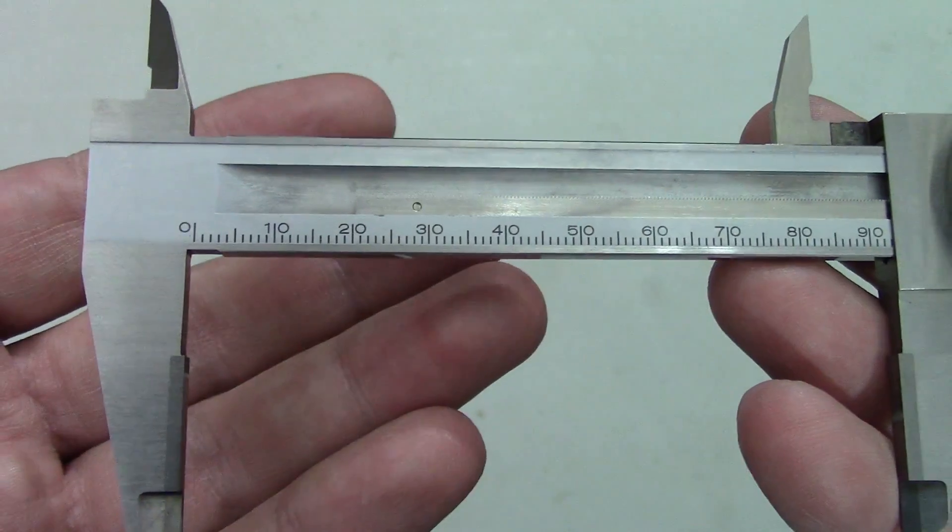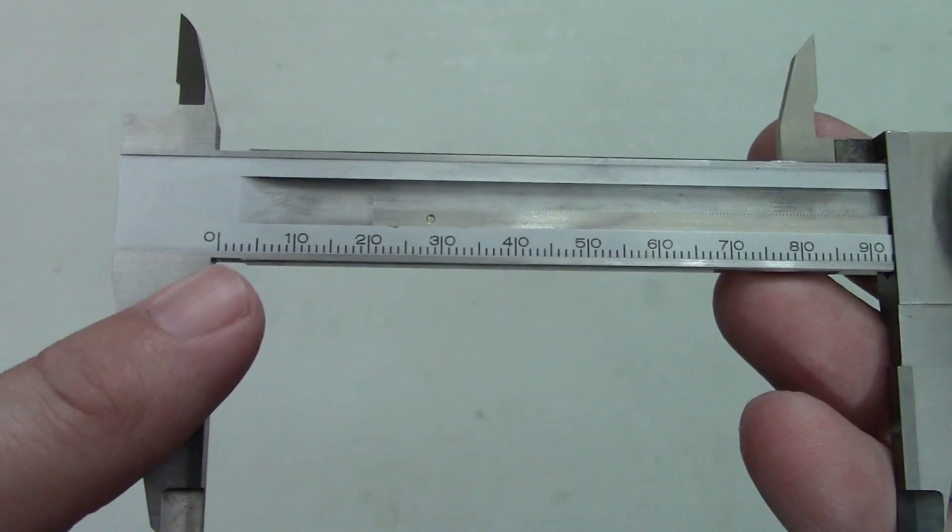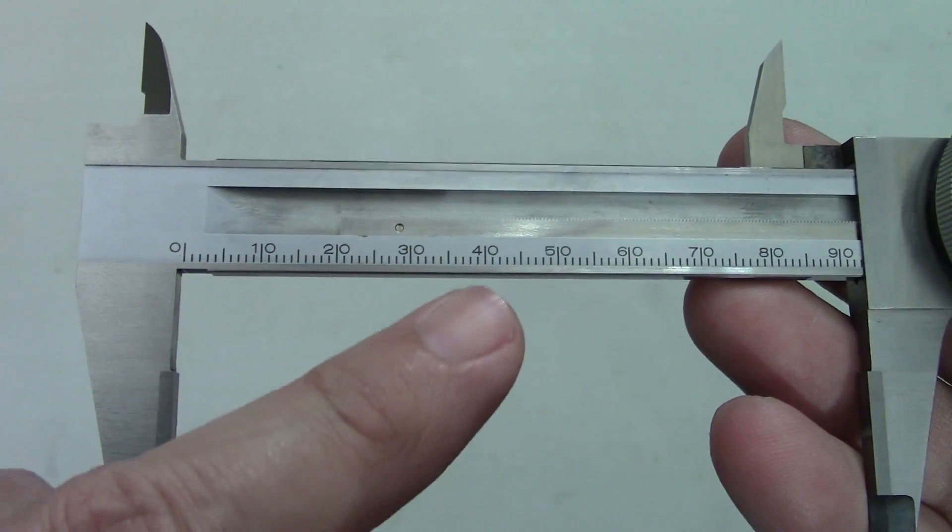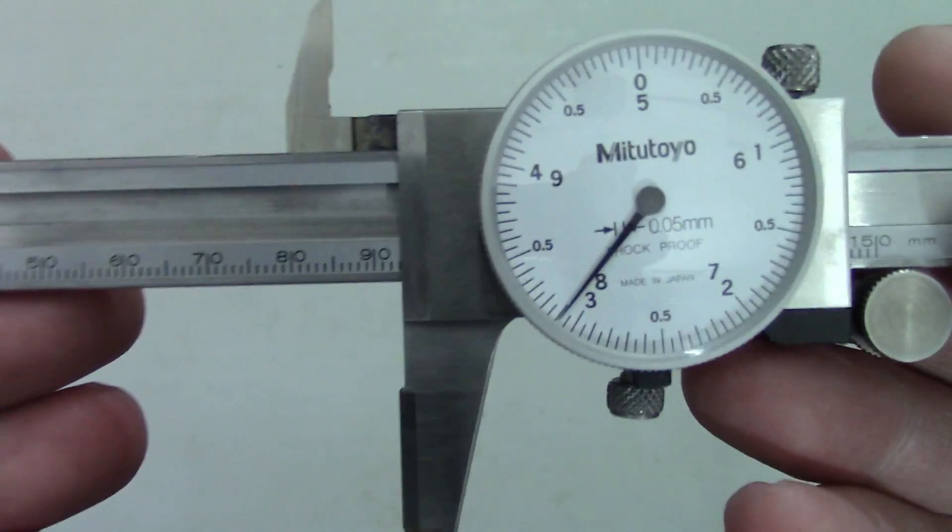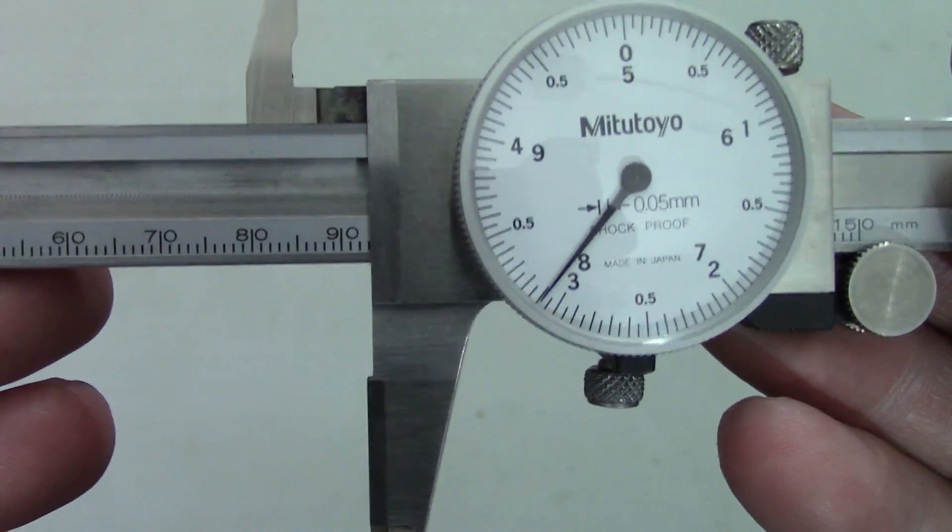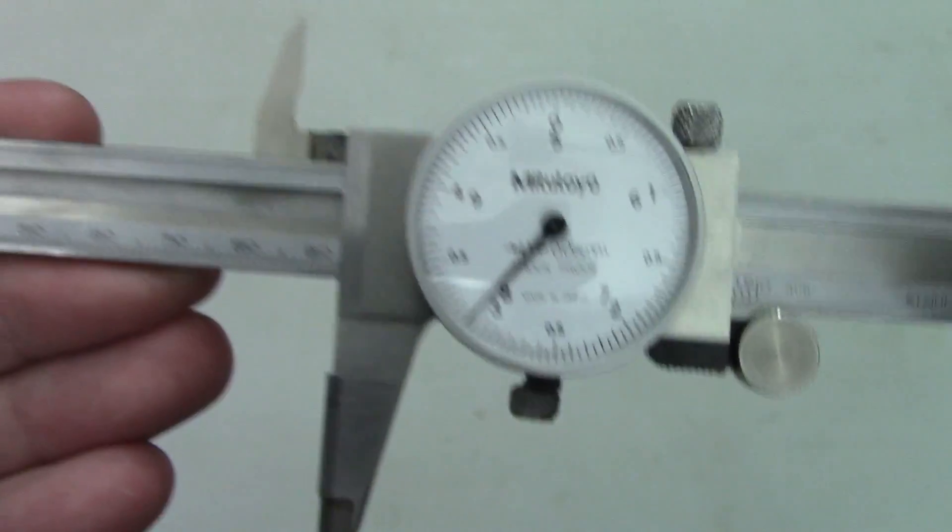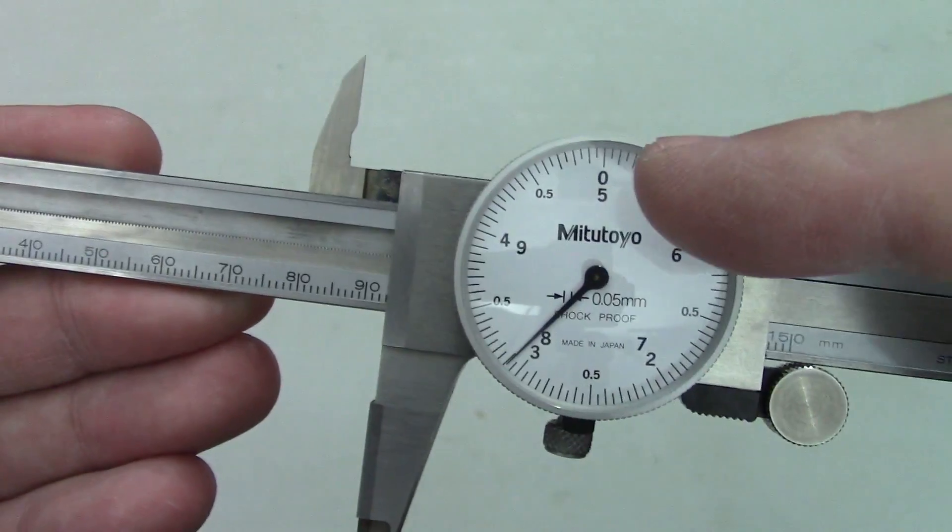First, let's talk about how to read dial calipers starting with the graduations on the beam and the dial. On the metric variety, the beam is graduated in millimeters with larger graduations every 10 millimeters that are numbered accordingly. The dial on this type is marked in 0.05 millimeter increments with each trip around the dial being 5 millimeters.